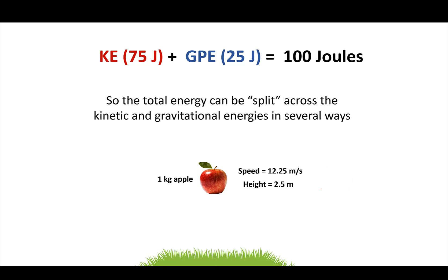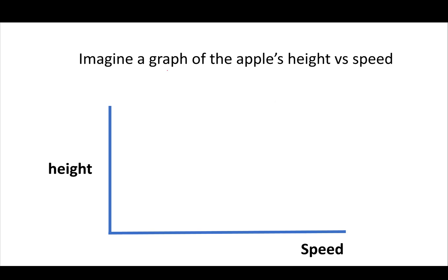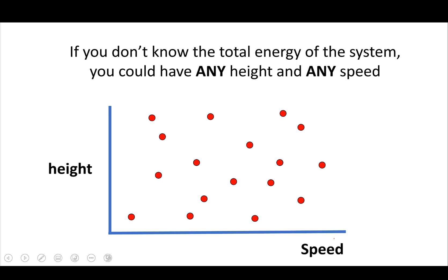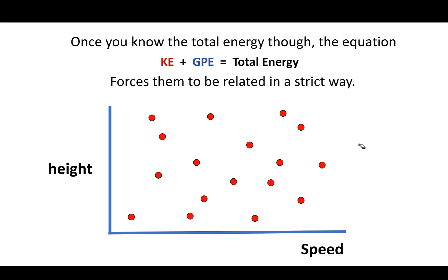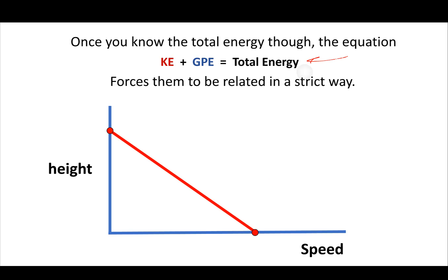So the total energy can be split across kinetic and gravitational energies in several different ways, but not infinitely. Imagine a graph of the apple's height versus speed. If you don't know the total energy, you could have any height and any speed — low height moving slowly, low height moving quickly, very high and going fast, or very high but moving slowly. There's no relationship between speed and height without knowing the total energy. But if you do know the total energy, there's suddenly a relationship between them — like the equation of a line in this abstract graph — structuring the relationship between speed and height.